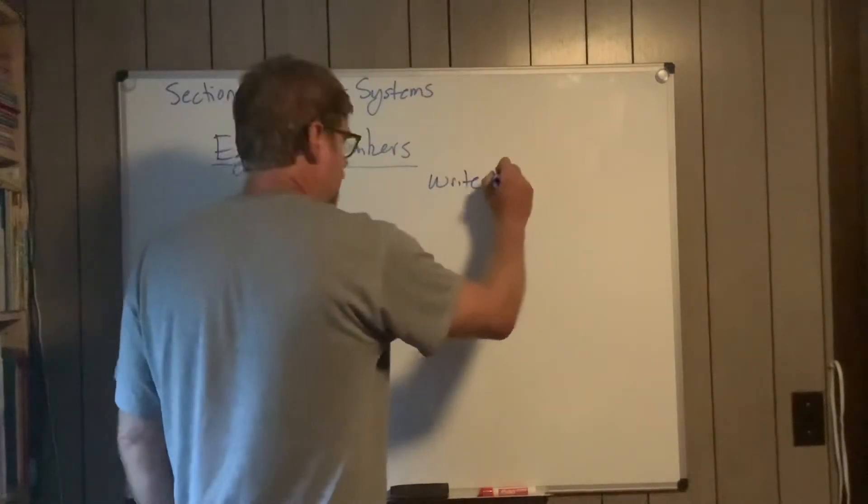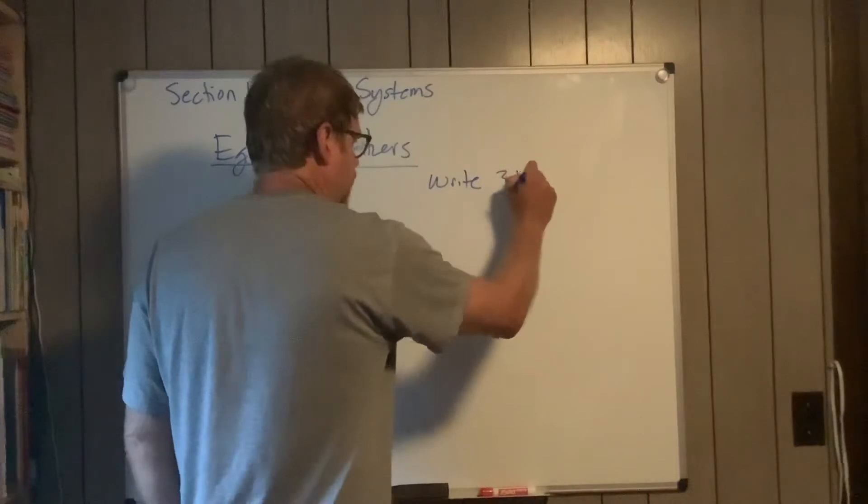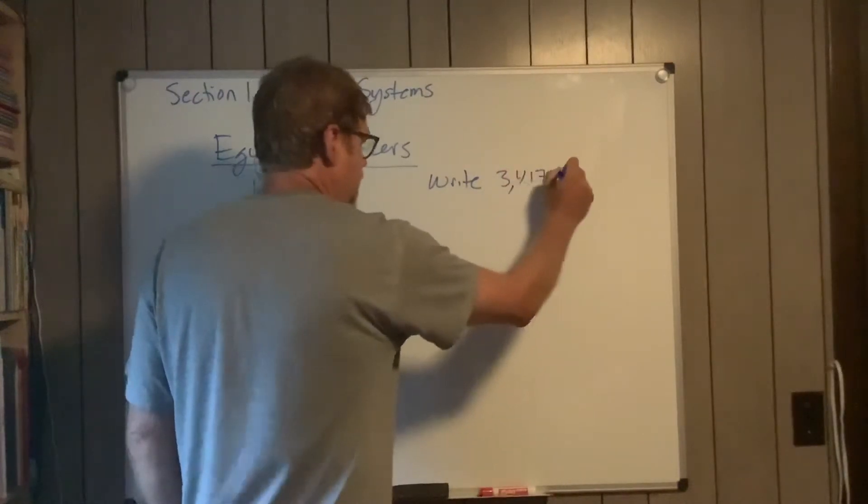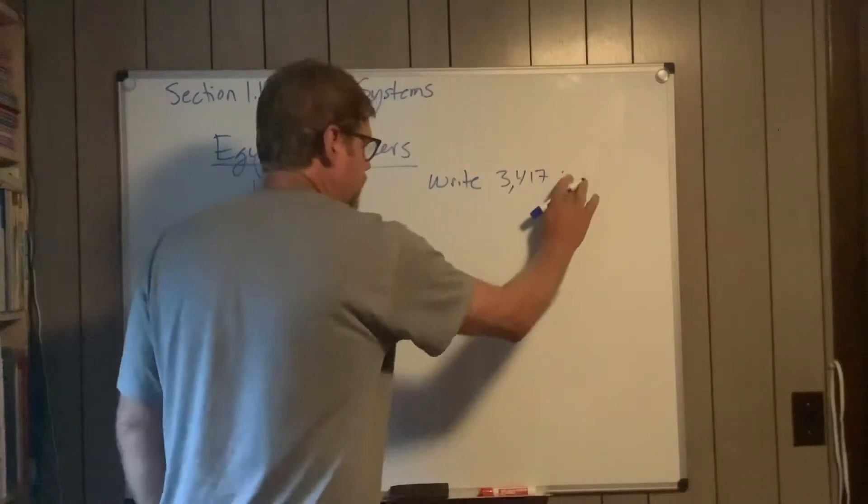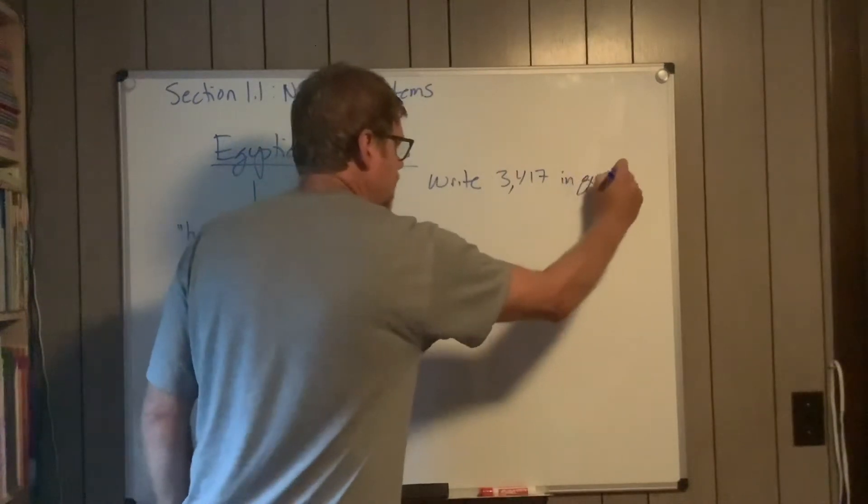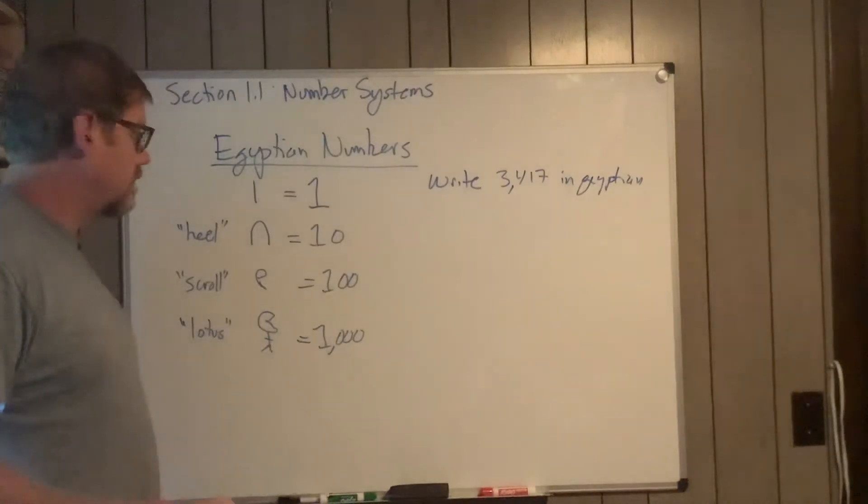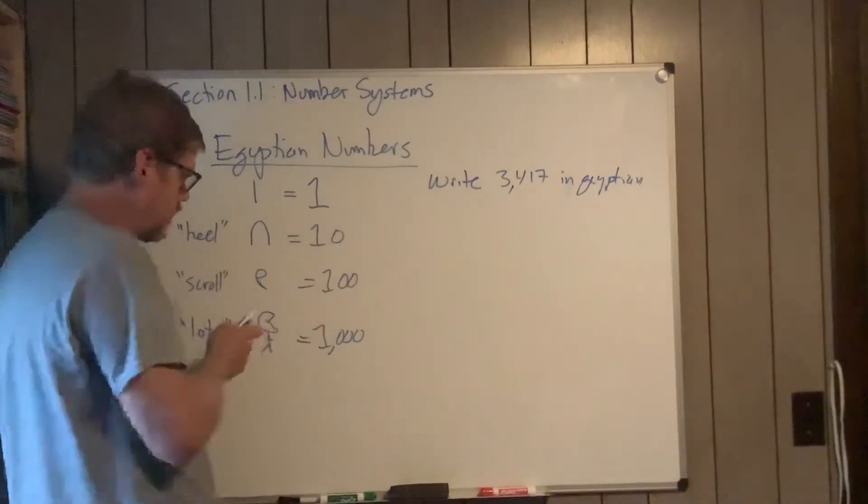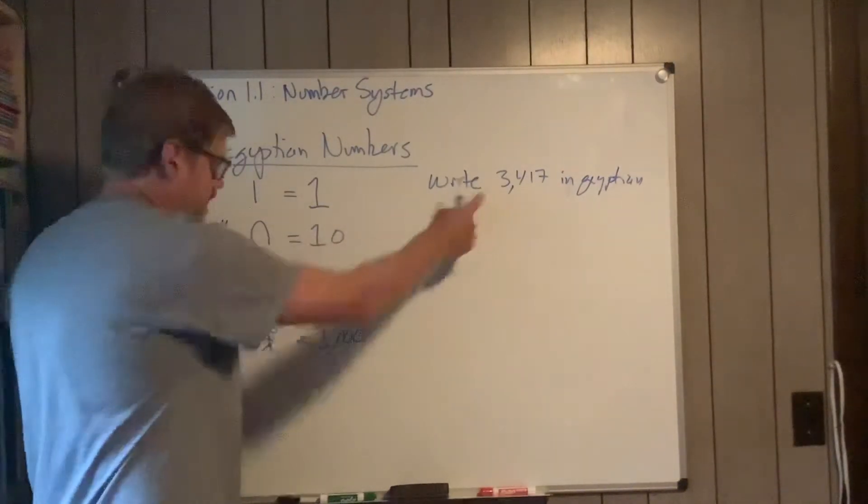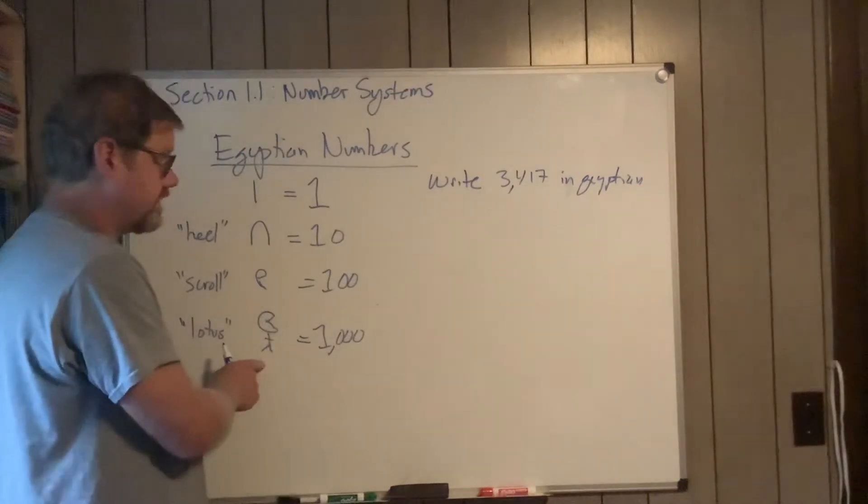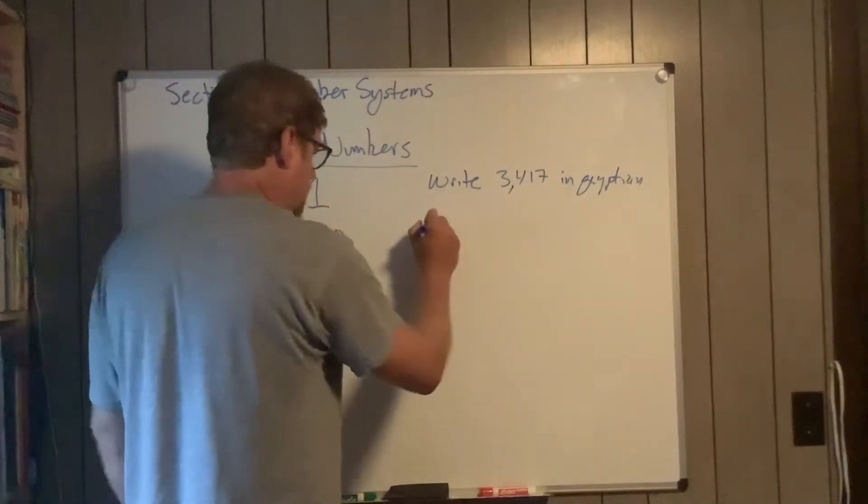Let's say if I'm going to write 3,417 in Egyptian. It's fairly straightforward. For the 3,000, I just need to write three of these guys.